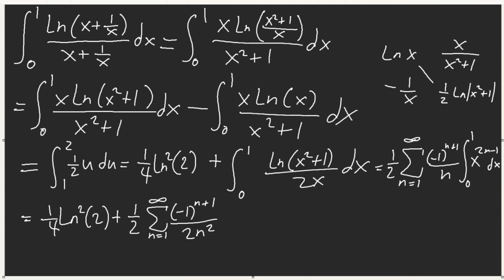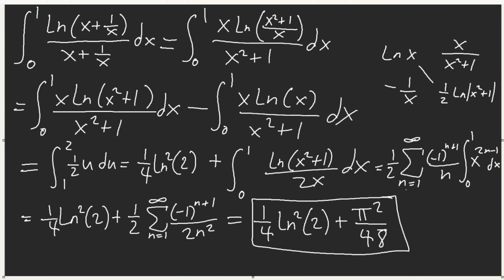So what we have is (1/4)·ln²(2) plus our Taylor series, which gives (1/2) times the sum from n=1 of (-1)^(n+1) / (2n²). This sum is π²/12. So our final answer is (1/4)·ln²(2) + π²/48. You have to be careful with constant juggling at the advanced level.